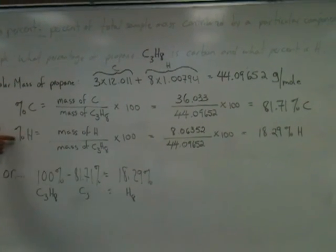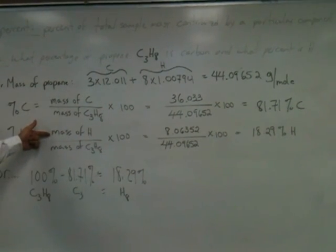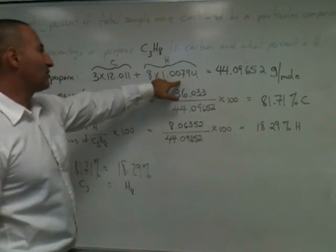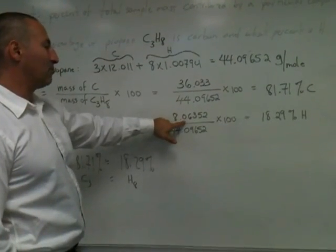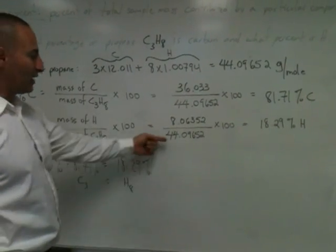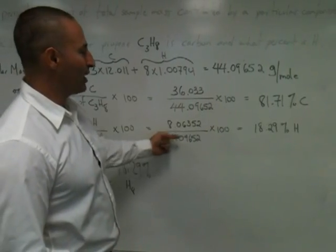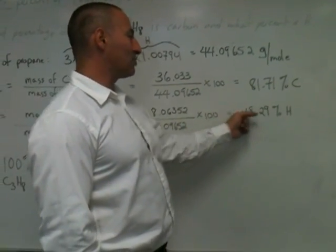We do the same calculation for hydrogen. The amount of hydrogen is eight times the mass of hydrogen, eight times 1.007. That's where we get this number, 8.06352. Again, divided by the total mass of propane, multiply by 100 to turn it into a percentage.